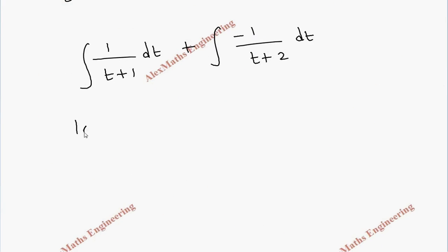And integration of this will be log mod t plus 1 minus log mod t plus 2 plus c. You can combine both the log by applying the log rule: log a minus log b is log a by b. Log t plus 1 by t plus 2 plus c.